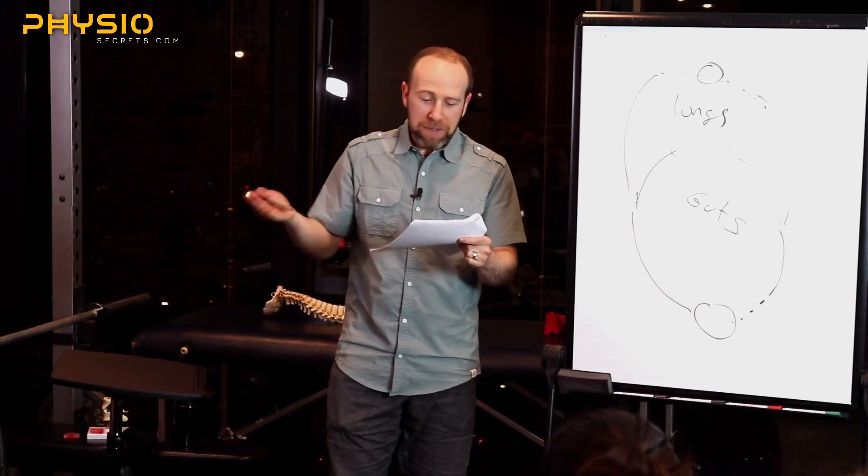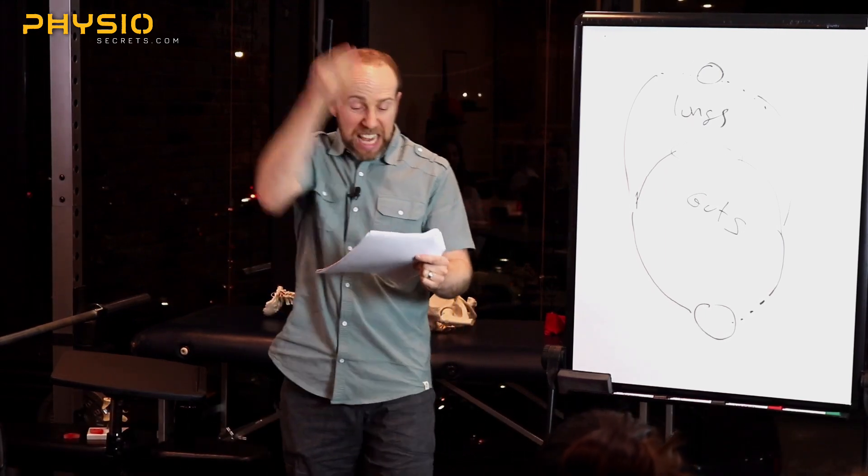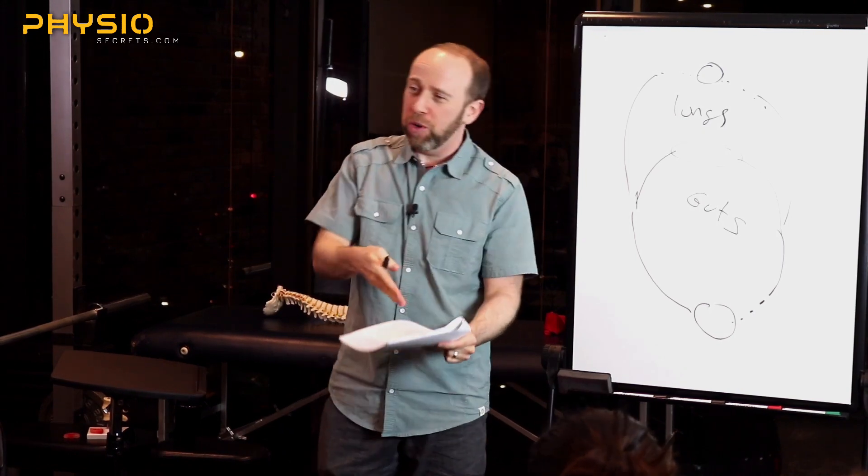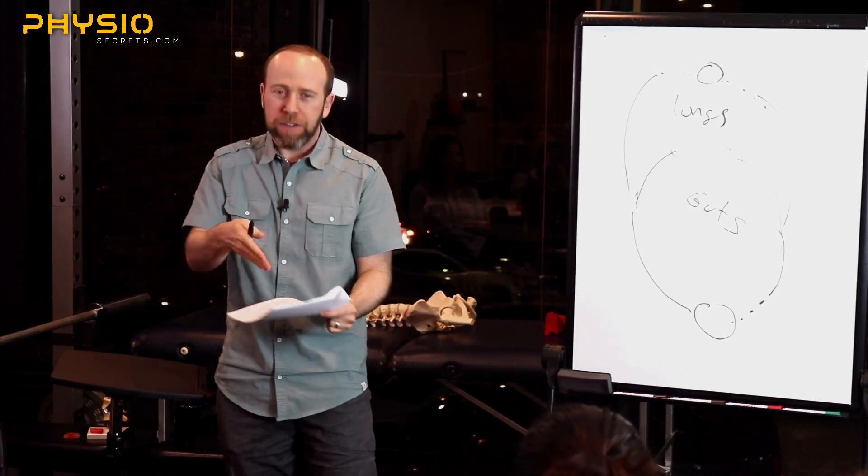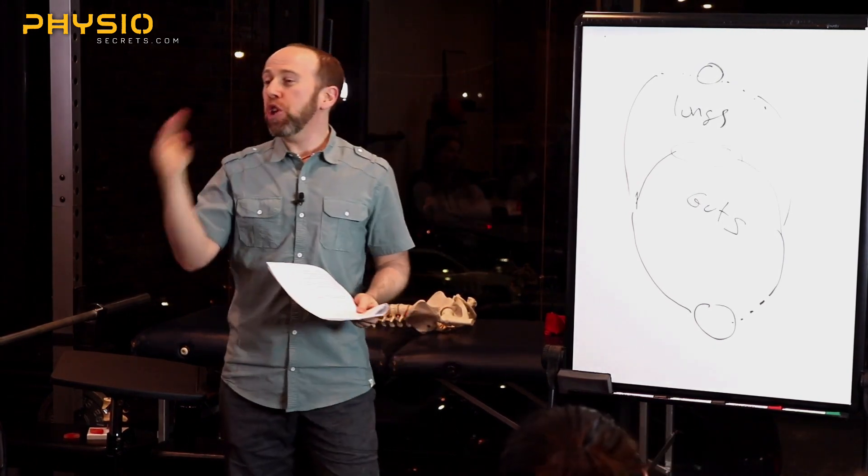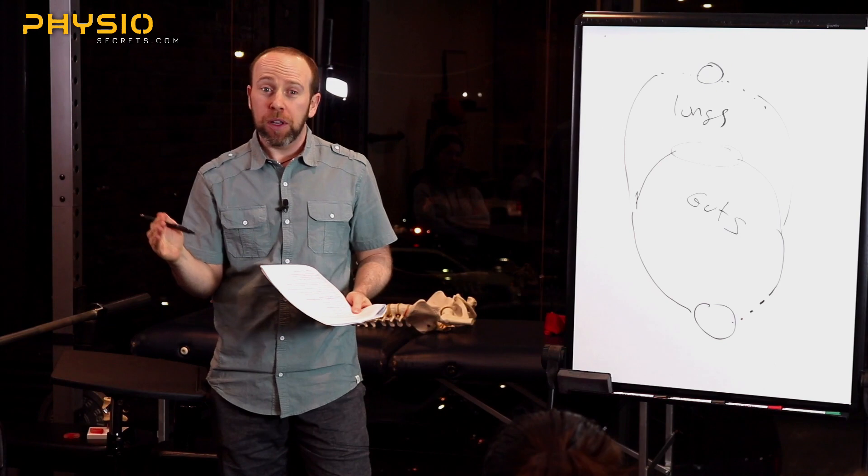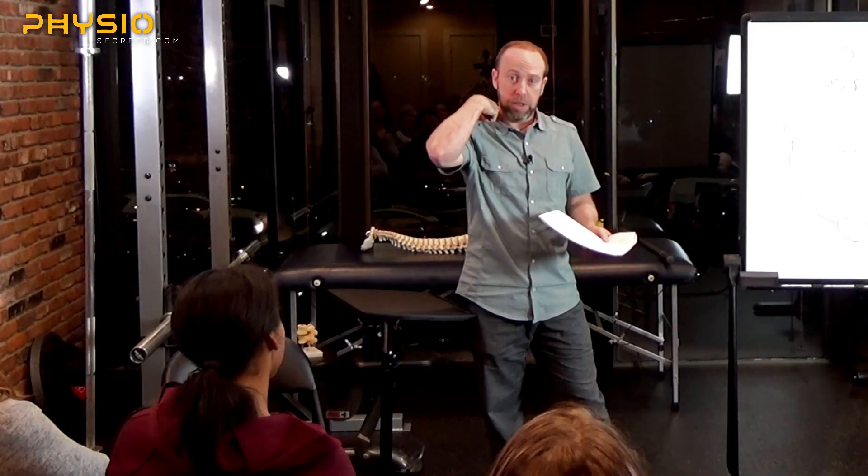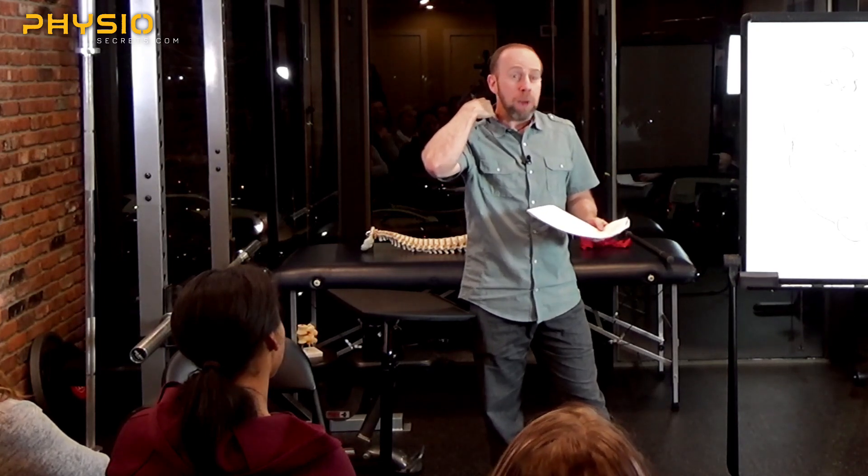The first rib doesn't move. In fact, the definition of a synarthrosis is an immovable fixed joint between bones connected by fibrous tissue. It doesn't move. It moves a little bit, but that's it. There's no joint. There's no synovial capsule. All the other ribs do have that. These are all joints. This one is not.